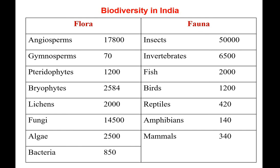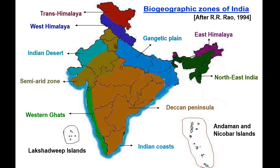As far as fauna biodiversity of India is considered: insects 50,000 species, invertebrates 6,500, fish species approximately 2,000, bird species 1,200, reptiles 420, amphibians 140, and mammals 340 species.